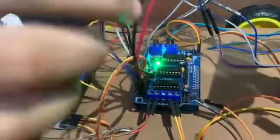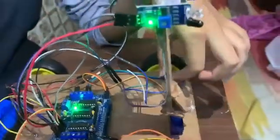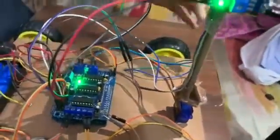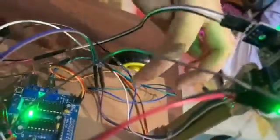The servo motor has three pins: one for VCC, one for ground, and one for input/output. The ultrasonic sensor has four pins: VCC, ground, input, and output.